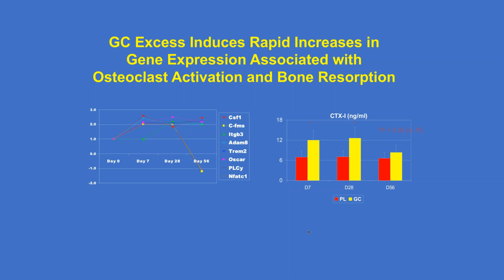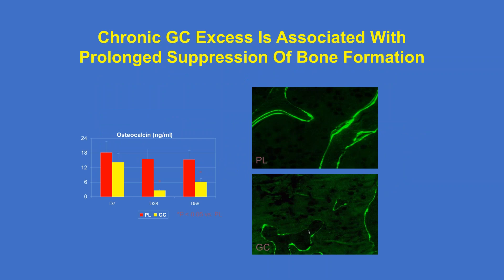This was different than bone formation or osteoblast activity. At day seven there was not much reduction in osteocalcin, but by day 28 it was markedly reduced and stayed reduced through day 56. Bone histomorphometry also showed reduction in tetracycline label consistent with reduced osteoblast activity.